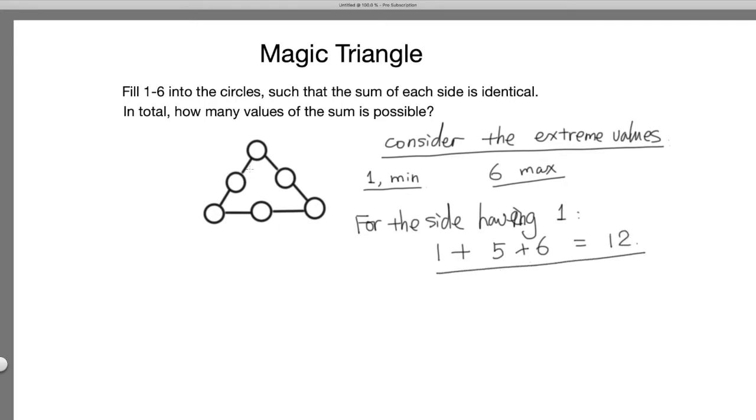We know that for each of the sides, the maximum it can go is at most 12. So the sum is going to be less than or equal to 1 plus 5 plus 6 equals 12. Because we have to put 1 somewhere, and for that side with the 1, that side is going to be at most 12.